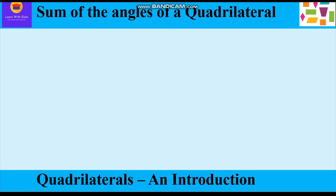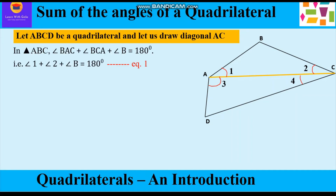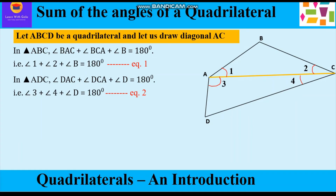Now let us find the sum of all the angles of a quadrilateral. Let ABCD be a quadrilateral and let us draw diagonal AC, which divides it into two triangles: ABC and ADC. In triangle ABC: angle BAC + angle BCA + angle B = 180°, or angle 1 + angle 2 + angle B = 180° — this is equation 1. In triangle ADC: angle DAC + angle DCA + angle D = 180°, or angle 3 + angle 4 + angle D = 180°, since the sum of angles of a triangle is 180° — this is equation 2.